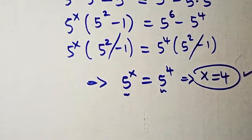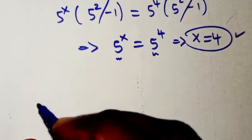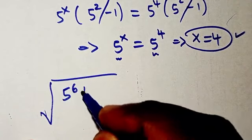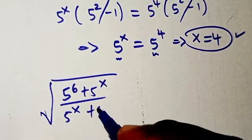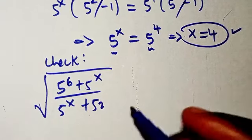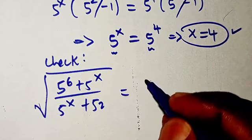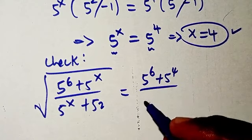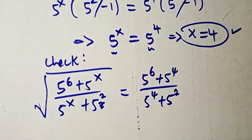That's the solution, but let's check whether we are right. We have the square root of (5 to power of x plus 5 to power of x) over (5 to power of x plus 5 to power of 2) — this is the check. Substituting x=4, we have 5 to power of 6 plus 5 to power of 4, divided by 5 to the power of 4 plus 5 to the power of 2.